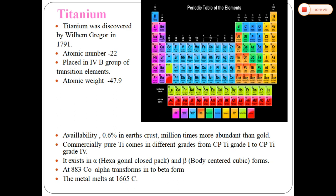Titanium was discovered by William Gregor in 1791. Its atomic number is 22, placed in the fourth group of transition elements. Atomic weight is 47.9. Availability is 0.6% in the earth's crust, a million times more abundant than gold, as discussed earlier. Commercially pure titanium comes in different grades: grade 1 through grade 4. It exists in hexagonal close-packed alpha form and beta body-centered cubic form. At 883°C, the alpha form transforms into beta form. The metal melts at 1,665°C.